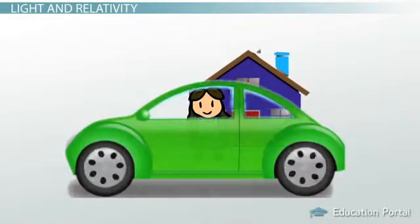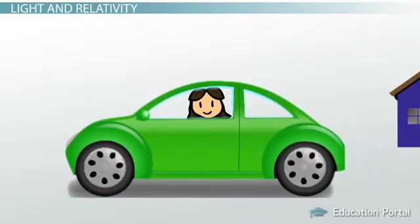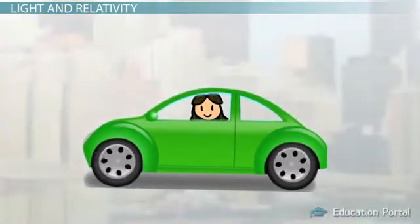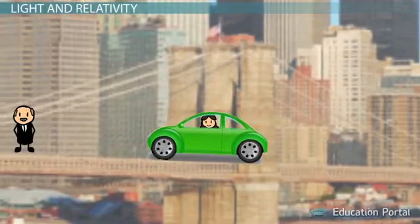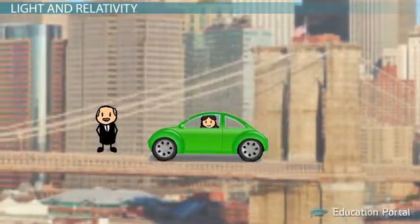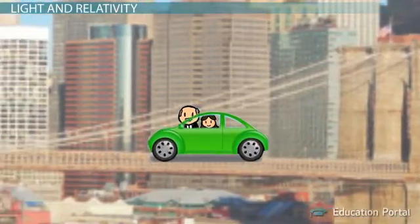Furthermore, objects traveling in a moving car appear to be at rest relative to the observer in the car. An observer on the side of the road, however, perceives the objects moving at the same speed as the car itself.